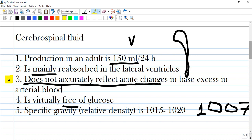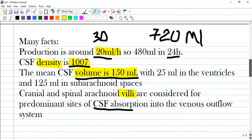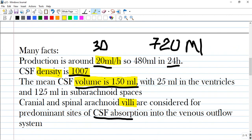Let's discuss every option. Many facts: production is around 20 ml per hour, so 480 ml in 2 hours. So if we are counting for 24 hours, from 20 ml per hour multiplying by 24, we will have around 480 or 500 ml.